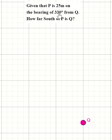Now, since P is on the bearing of 330 degrees from Q, and it's 25 meters away, it means that P will be located at somewhere around this point, the top left corner of my screen.